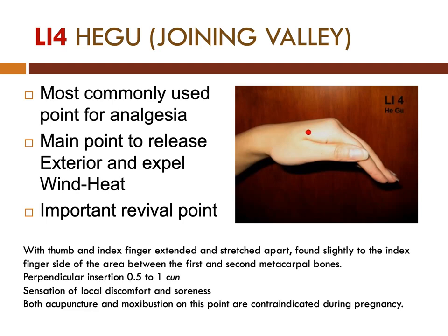To locate this point, squeeze the thumb and index finger together. It is found slightly proximal to the midpoint between the first and second metacarpal bones. It is needled with perpendicular insertion, 0.5 to 1 cun. Needling this point, we can expect a sensation of local discomfort and soreness. Both acupuncture and moxibustion on this point are contraindicated during pregnancy.